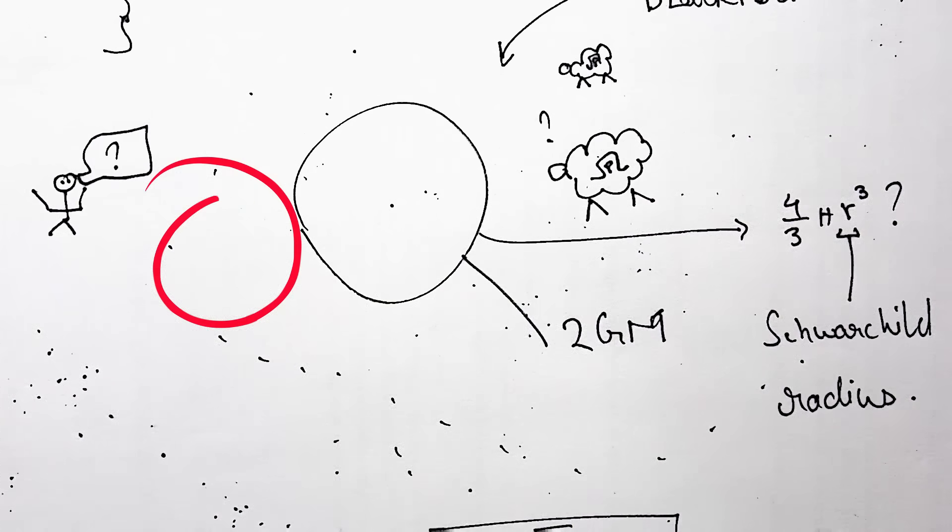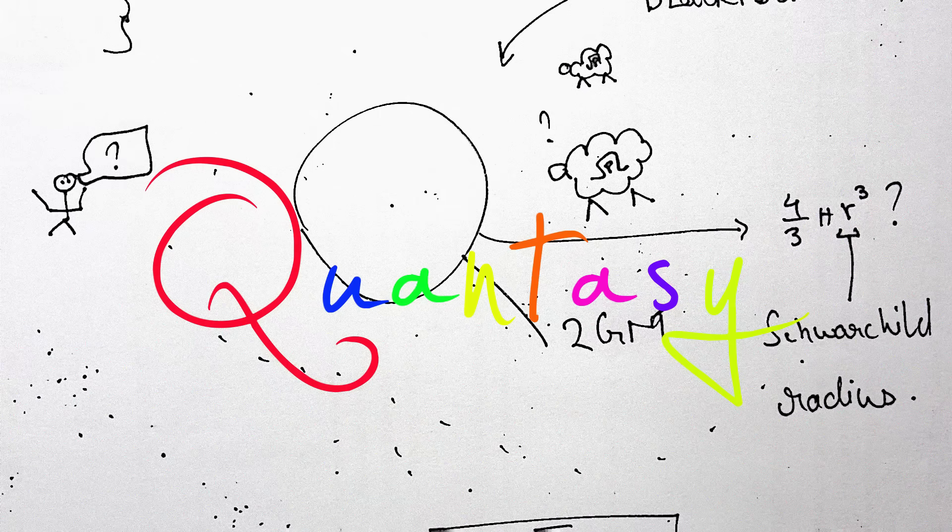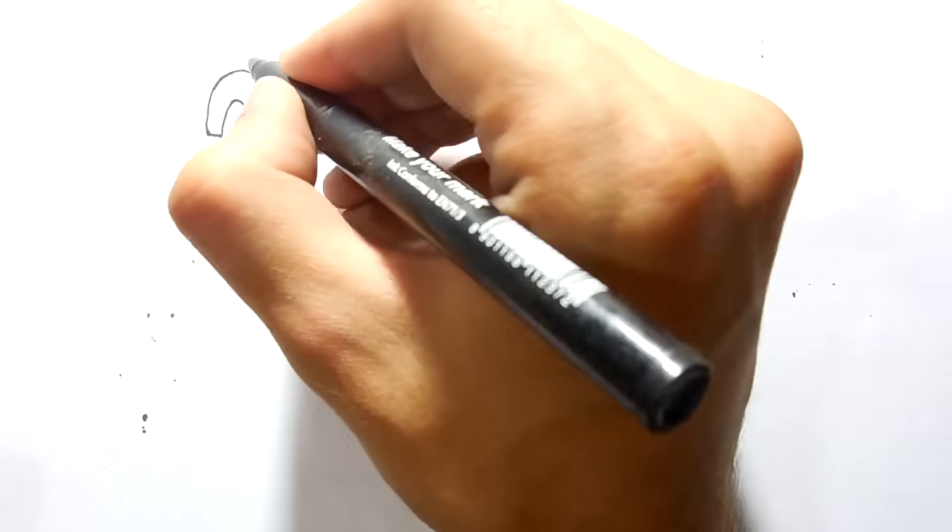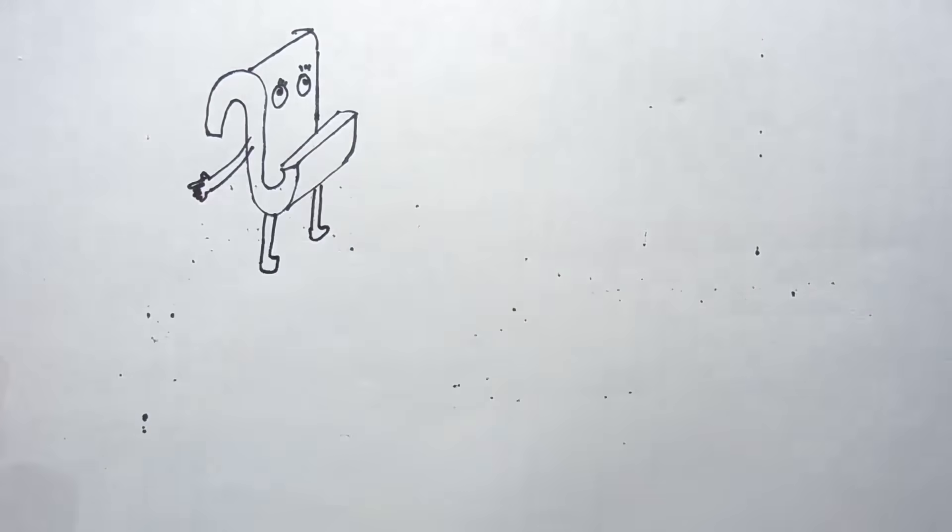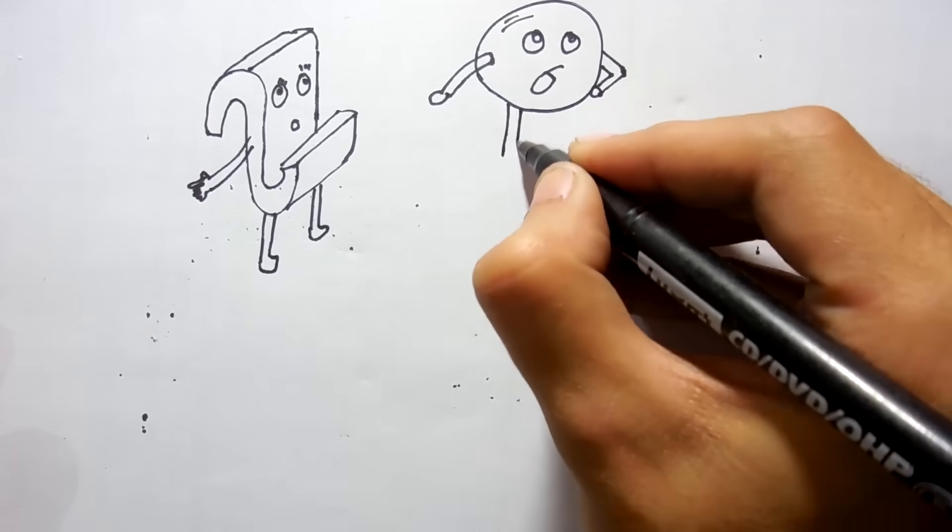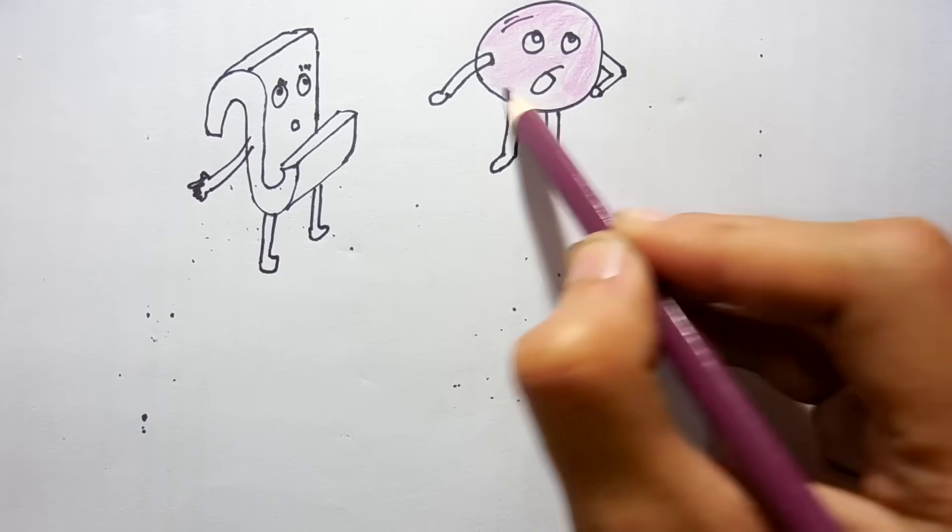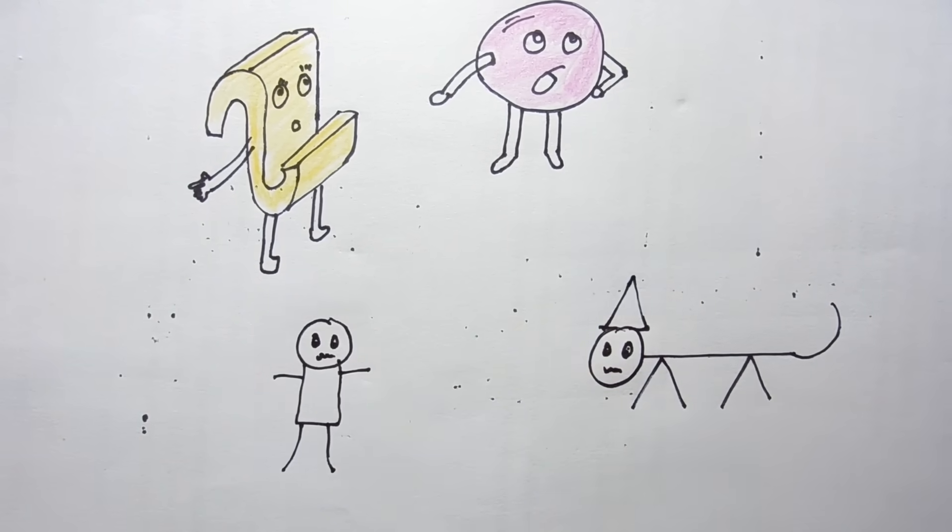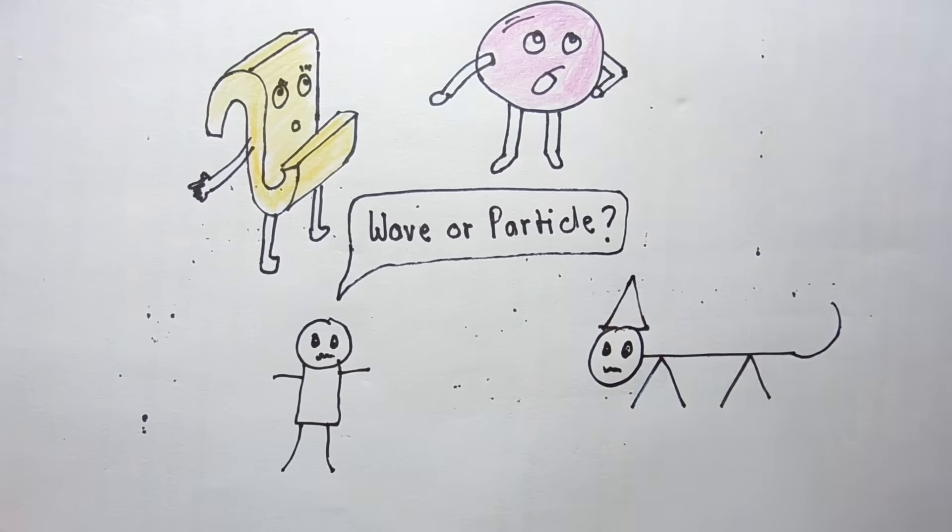The framework in which quantum mechanics and special relativity are successfully reconciled is called quantum field theory. It is based on three basic principles. Two of them are quantum mechanics and special relativity. The third one, which I wish to emphasize, is the postulate that every elementary particle is a point-like vibration in quantum fields. Remember the wave-particle duality?